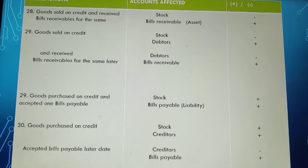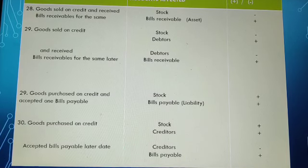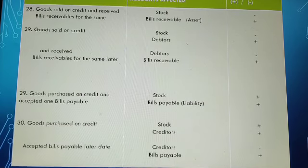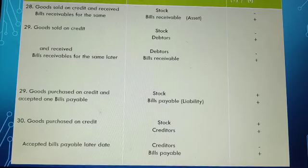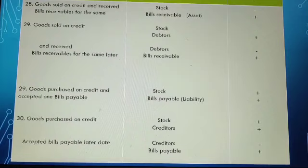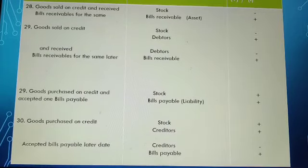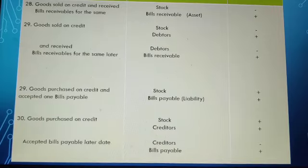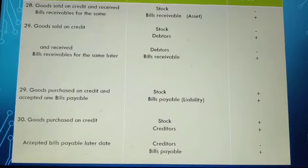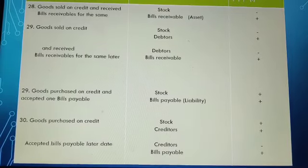Similarly, for goods purchased on credit with accepted bills payable: stock is increased and bills payable (a liability you have to pay in future) is added under your liabilities section. If initially goods are purchased on credit, stock and creditors increase. When a later transaction says 'accepted bills payable,' you reduce creditors by the corresponding amount and open a new account called bills payable.